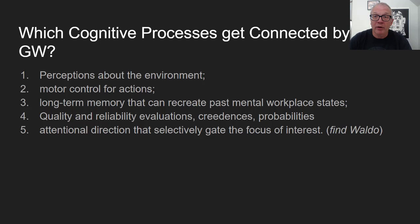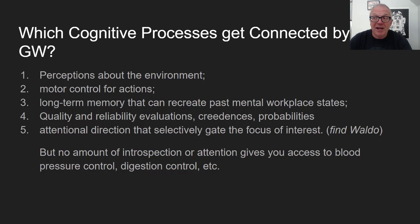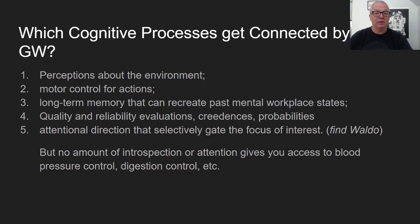Attentional direction selectively gates the focus of interest — like people watching a basketball game who can't see a gorilla walk through, or searching a Where's Waldo puzzle. These are obviously within the global workspace, things you're conscious of and directing. But no amount of introspection gives you access to blood pressure control, digestion, or involuntary actions. Those parts of the cognitive system are completely alien to conscious access.